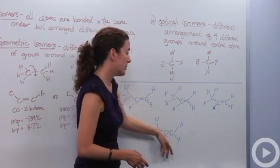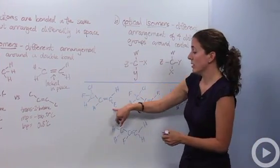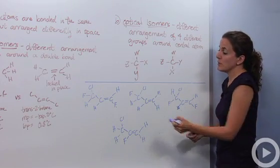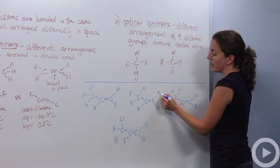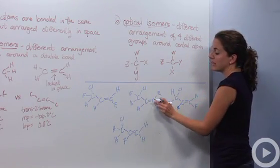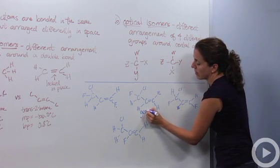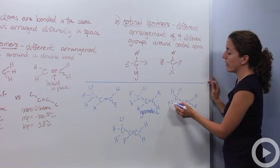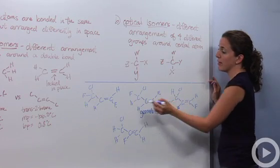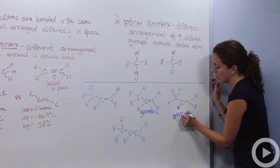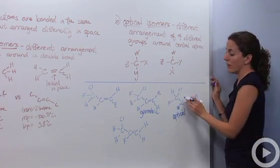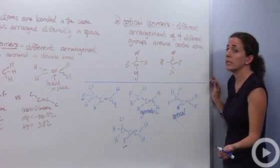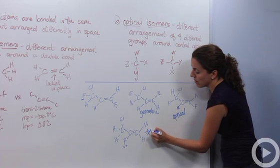Let's talk about four different isomers in this practice problem. We have this compound, and we want to figure out what type of isomer each of the others is compared to it. Looking at this one versus this one — the main difference is this fluorine is down here, but this fluorine up here is up. Because they can't freely switch around a double bond, this is a geometric isomer. This next one has a different arrangement around the carbon — chlorine, hydrogen, fluorine on one carbon versus chlorine, fluorine, hydrogen on another — so this is an optical isomer. And looking at this one, the fluorine is down here on a completely different carbon than where the fluorine is up here, so we're going to call this a structural isomer.